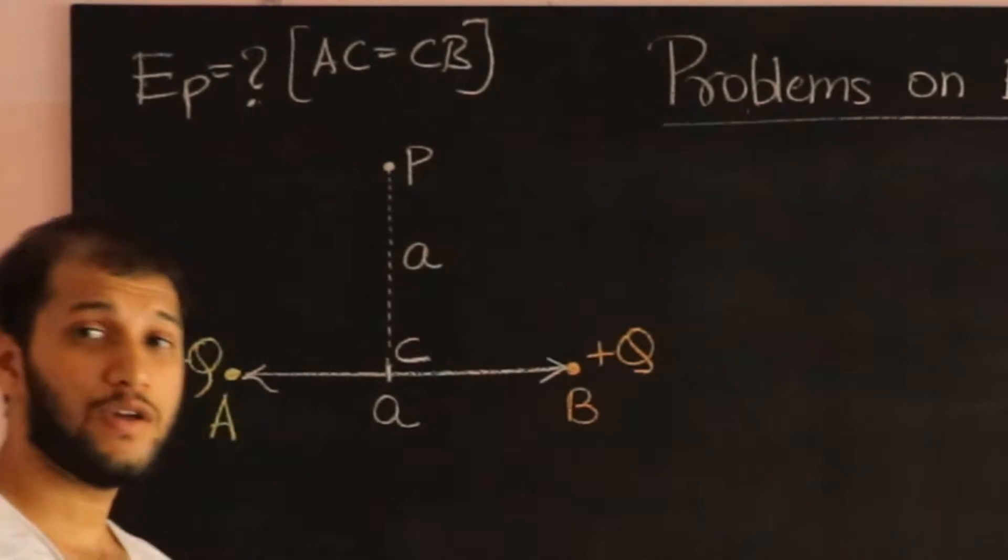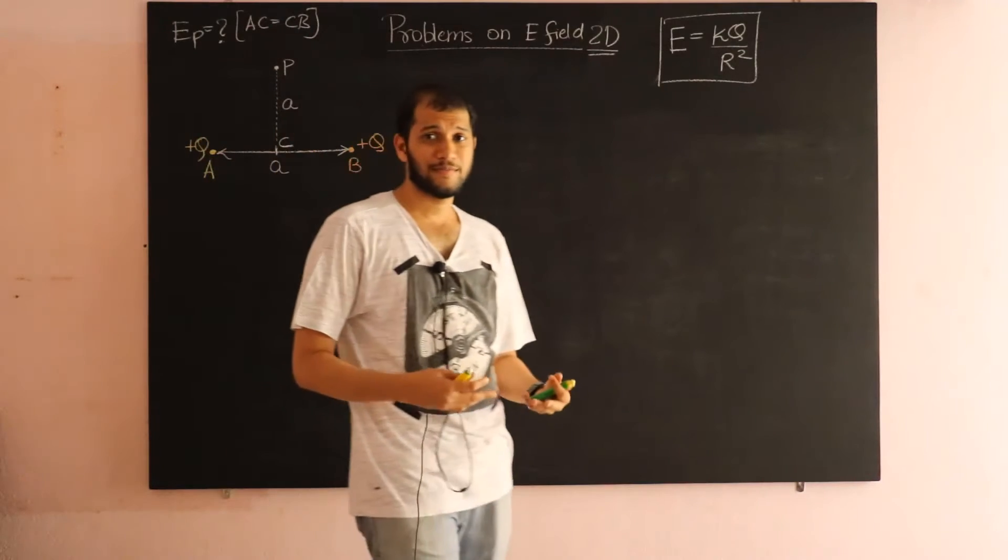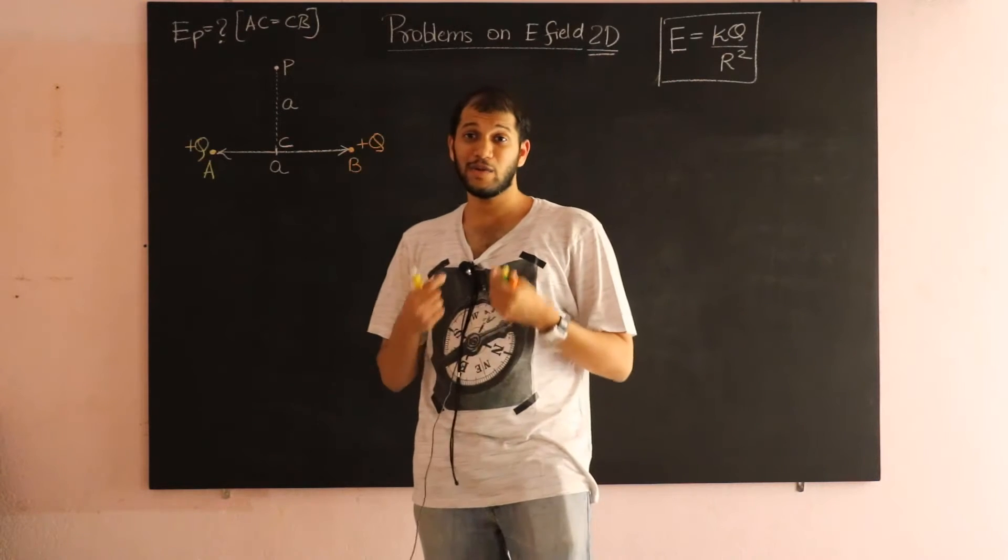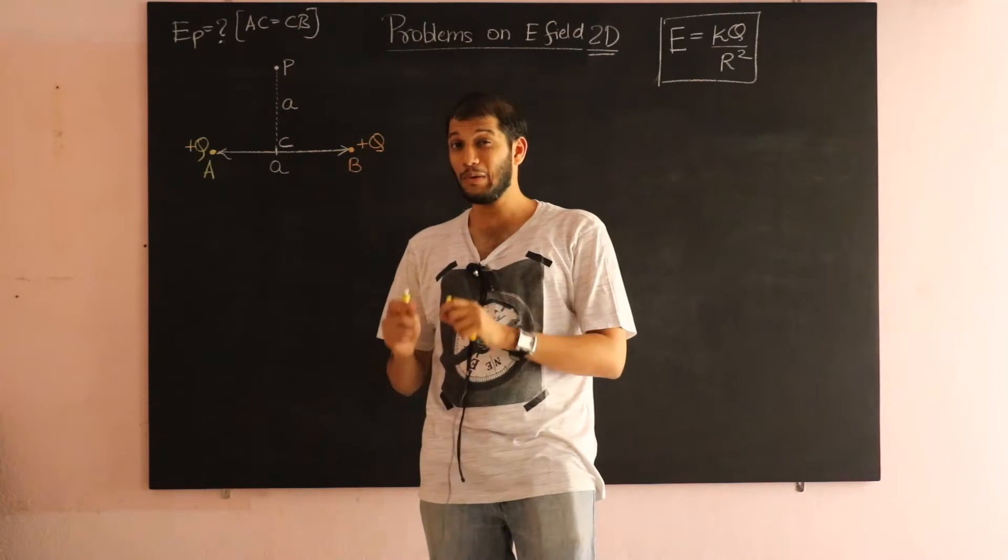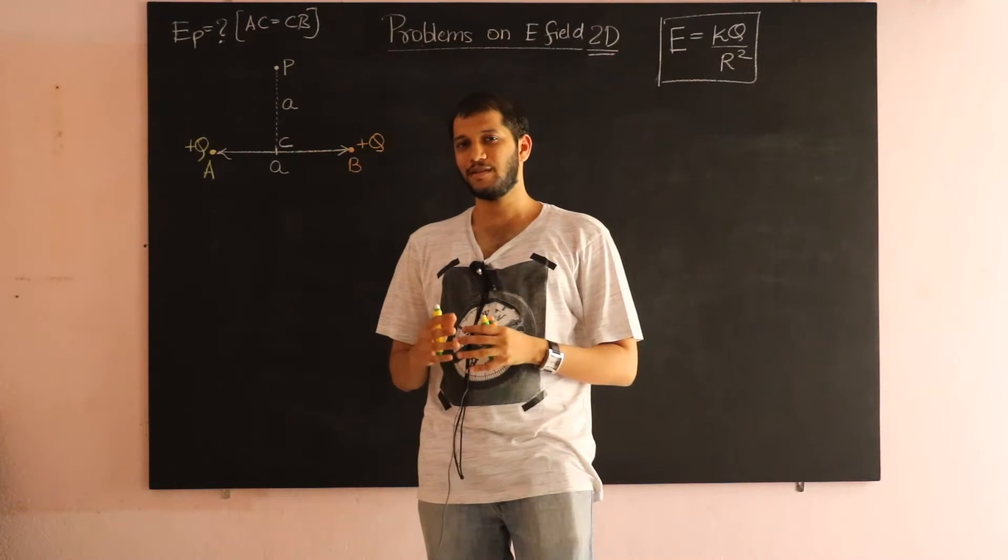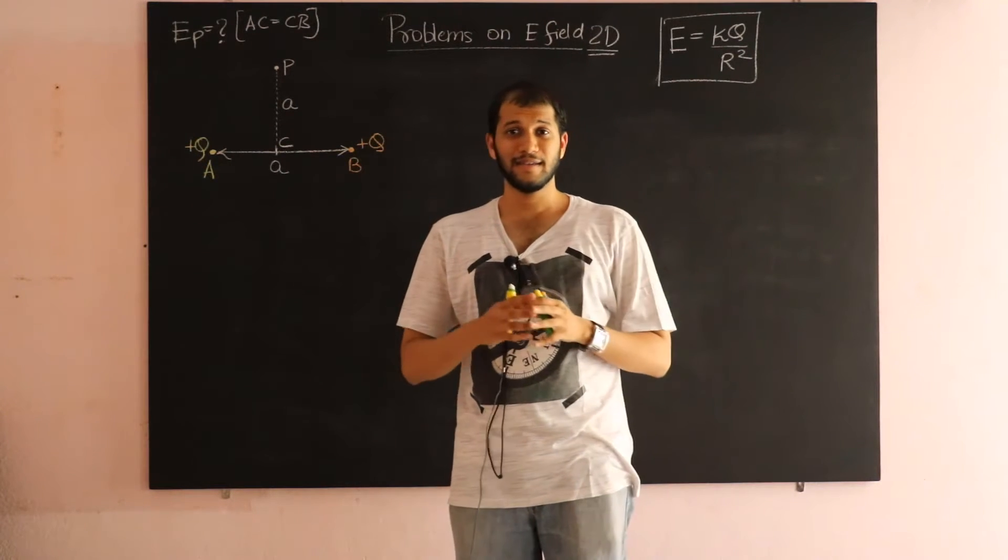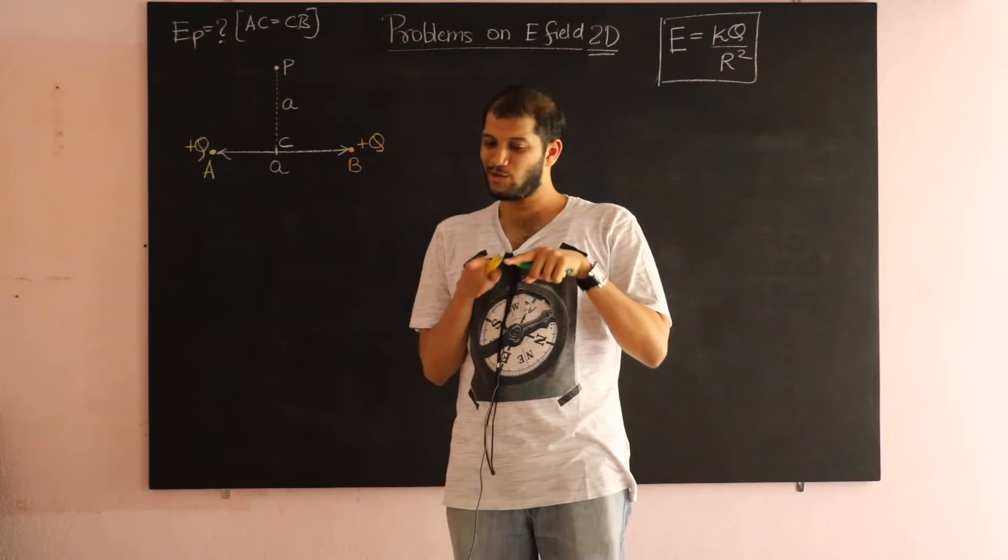Okay, so we are going to do the same thing as we did in one dimension. The first step will always be to calculate the electric field due to individual charges separately alone, and then you do a superposition theorem. The only difference now is that in the previous case, in the one dimensional case, adding them was very easy. Either you add them or subtract.